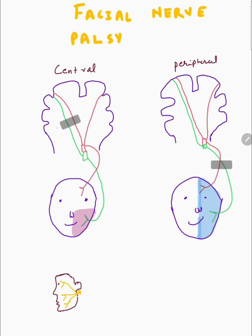So now if we have a central nerve lesion — a lesion above the facial nerve nucleus — then both the contralateral fiber pathways to the upper face and the lower face will be affected. However, because the ipsilateral fibers to the upper face are intact, that results in a sparing of the forehead. There are no ipsilateral fibers to the lower face, so the lower face will be affected.